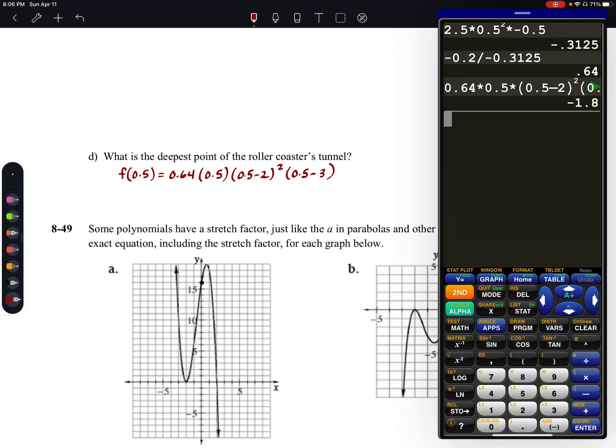Boom, you see negative 1.8. So if it's negative 1.8, what does that mean? Remember our scale factor. That means we would be negative 1.8 would be like 180 feet below the surface. So the deepest point would be 180 feet below the surface.